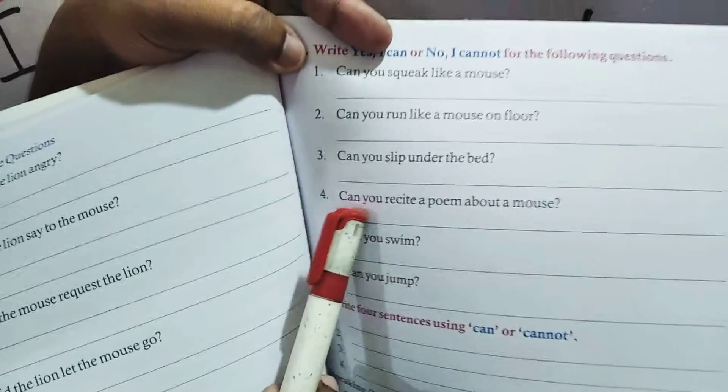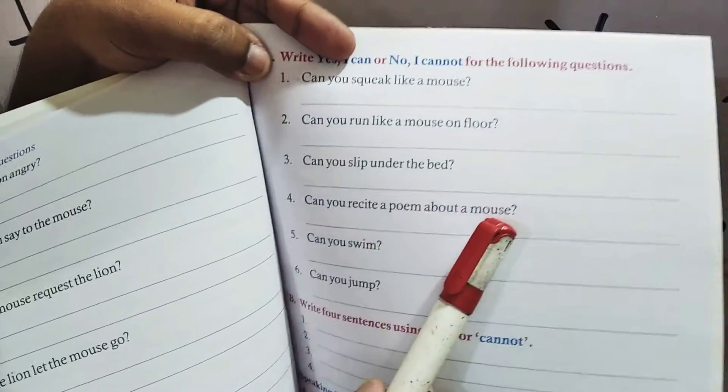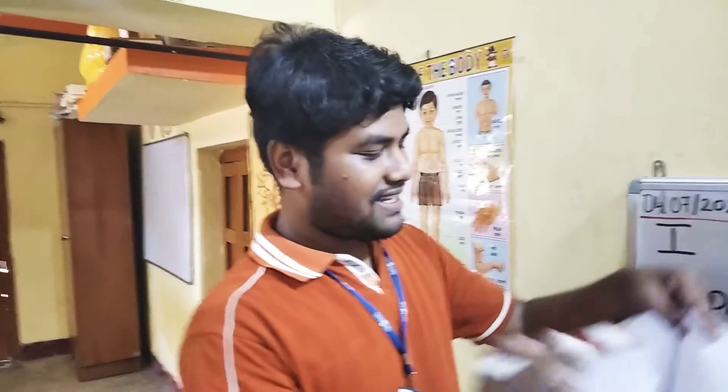Number four: Can you recite a poem about a mouse? क्या आप चूहे के बारे में एक कविता बोल सकते हैं? अगर आप बोल सकते हैं तो Yes, I Can लिखेंगे; अगर नहीं बोल सकते हैं तो No, I Cannot लिखेंगे।